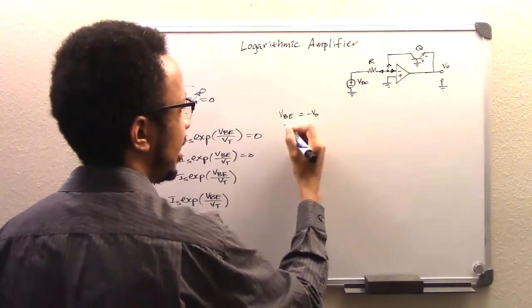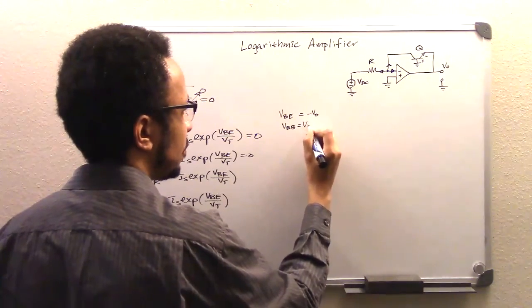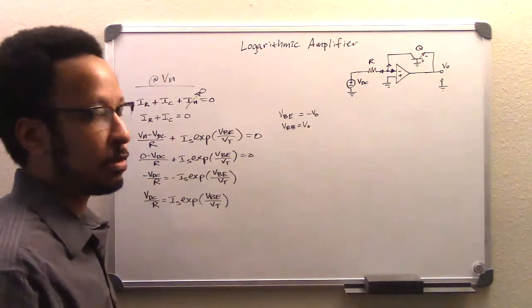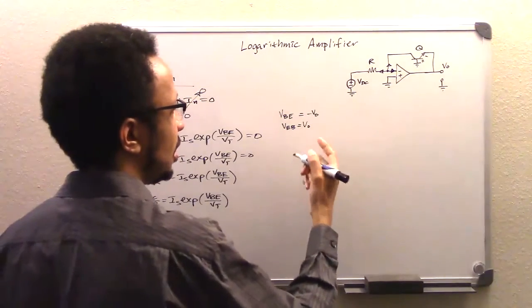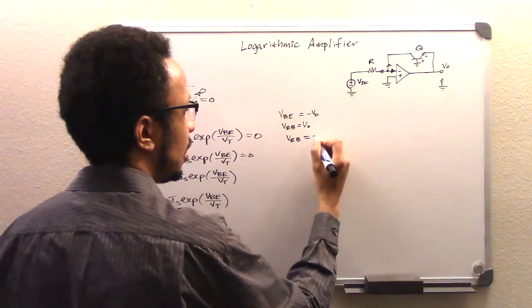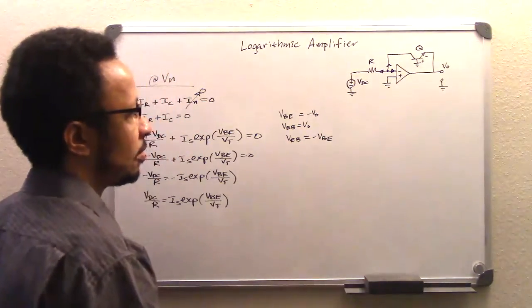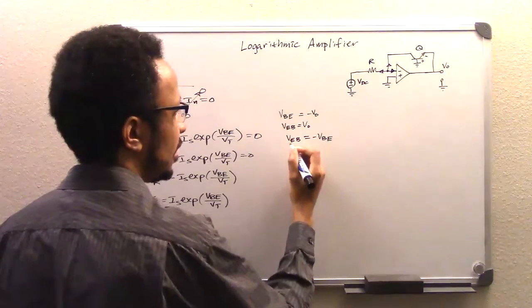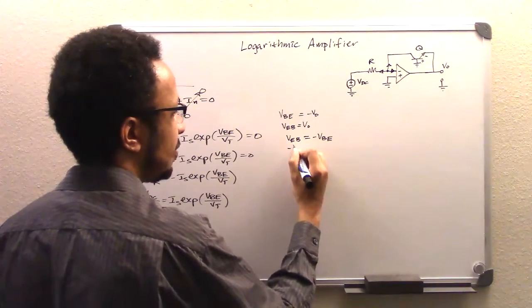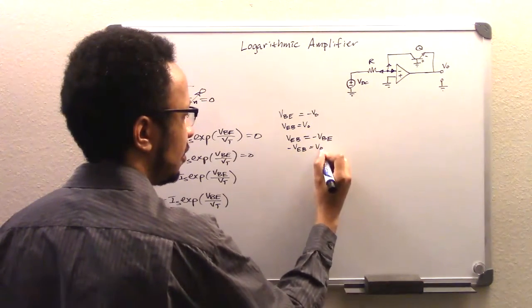Of course, we could have stated that as VEB equals Vout. And that's also true. But VEB is just VBE upside down.